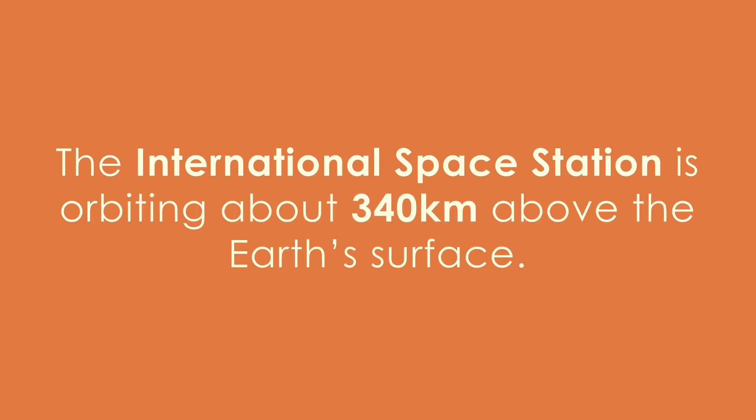For example, the International Space Station is orbiting about 340 kilometers above the Earth's surface. That's more than 38 Mount Everests stacked on top of each other. From that height, you might think that the crew of the ISS must be able to see a ton of the Earth's surface, right?